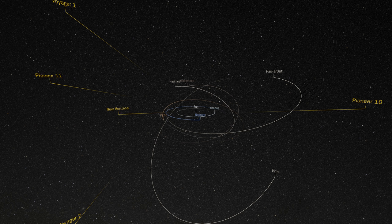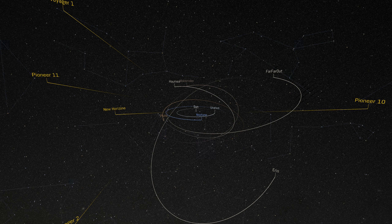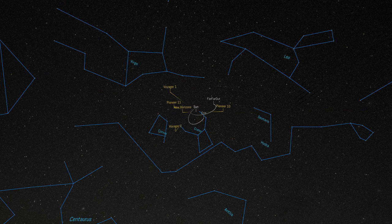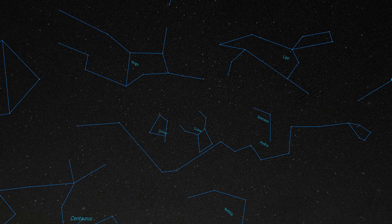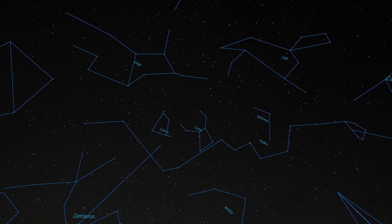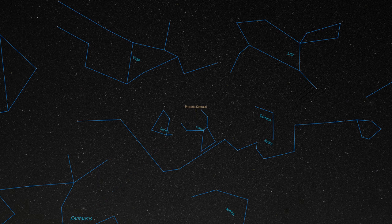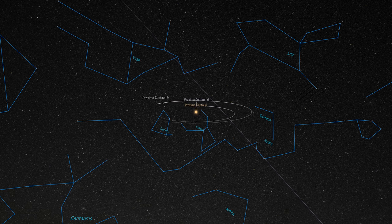From anywhere within the solar system, the patterns in the sky made by the stars and the Milky Way galaxy are still the familiar ones that we see from Earth, outlined here in blue. But when we leave our solar system, our perspective changes and the patterns of the stars begin to shift as we approach the closest neighbouring star, Proxima Centauri.